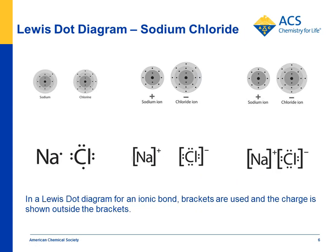You can also use Lewis dot diagrams to show ionic bonding. Using the classic example of sodium and chlorine: the sodium loses an electron and the chlorine gains one, so sodium becomes a positive ion and chlorine becomes a negative ion, and then they come together to form a bond. The ions are shown with brackets with a charge outside — sodium has no dot because it lost its outer electron, giving it a plus sign, while chlorine gained an electron so its outer energy level has eight, giving it a minus sign.